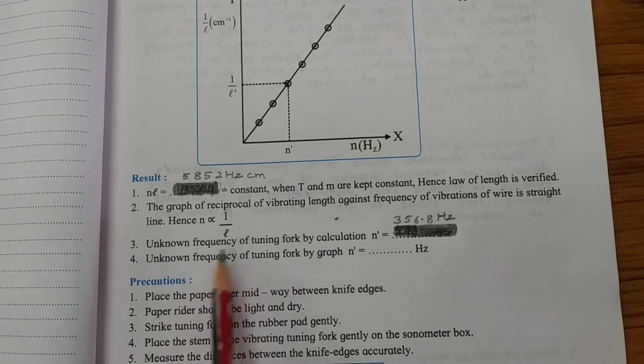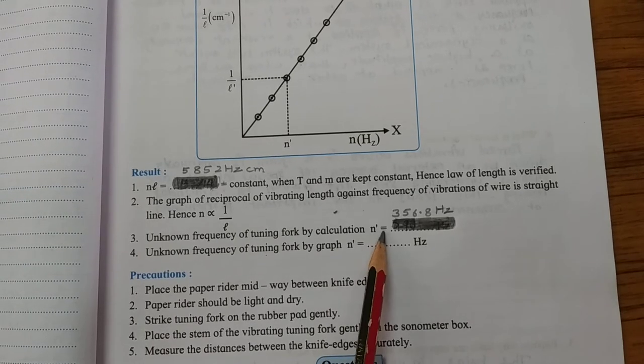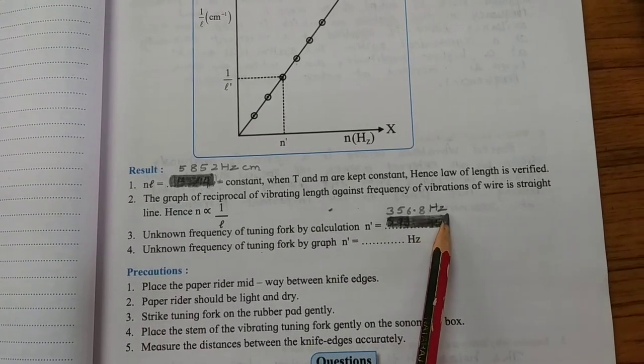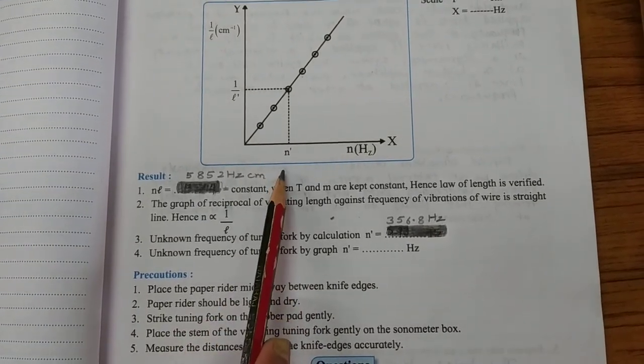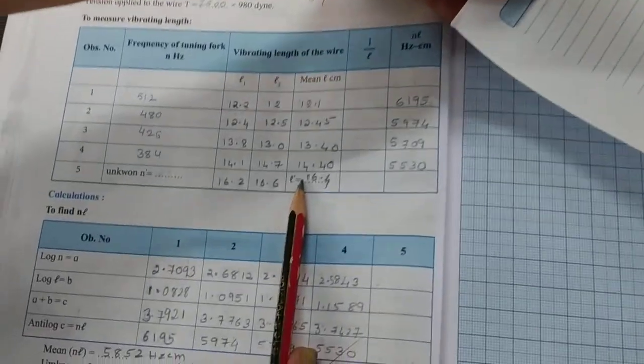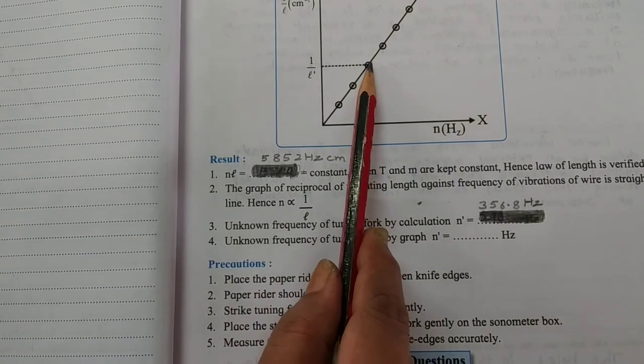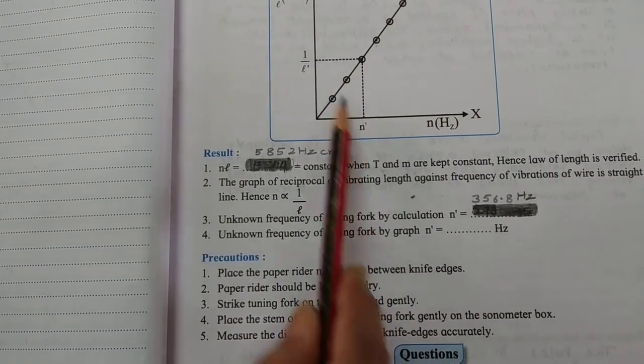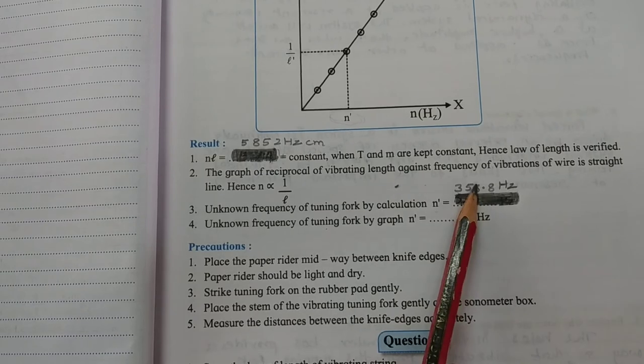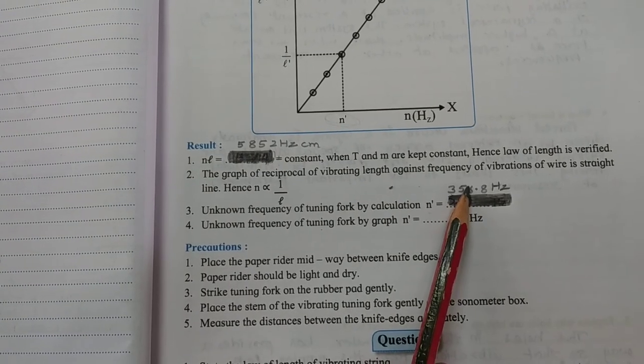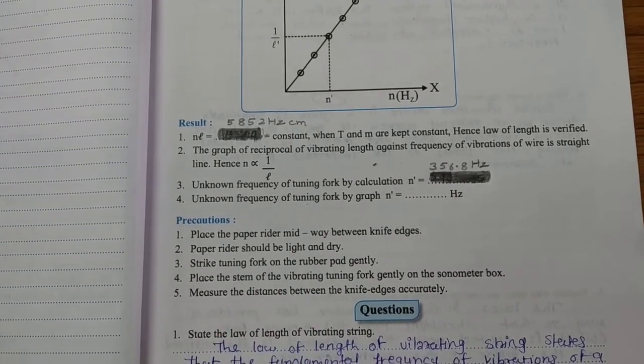We found the unknown frequency. We took a tuning fork, we assumed it is unknown to you and that came out to be 356.8 hertz. From graph also, you can find the unknown frequency. You choose this l dash, 1 by l dash, search it on the graph. Draw a line parallel to the x-axis, drop a line which is parallel to the y-axis. Whatever is the reading, that is n dash. That n dash will be almost equal to this. Students, this is your homework. You will find out n dash by graph. Thank you.